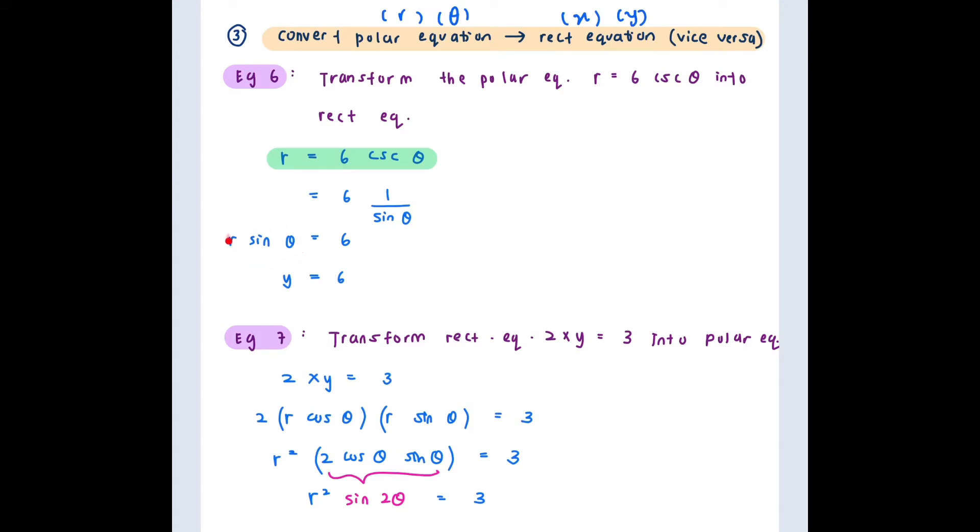So now let's convert because we know R sin theta is equal to y. Therefore, the final answer is y equal to 6. So now we have a rectangular equation of a horizontal line y equal to 6.